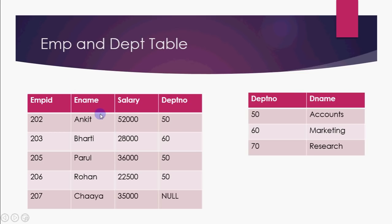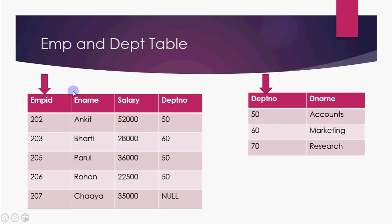The employee table stores employee-related data, and the department table stores department-related data. In the employee table, we have columns like employee ID, employee name, salary, and department number. Clearly, employee ID identifies one employee — it is unique and cannot be left blank. Similarly, in the department table, department number identifies each department — it is unique and not null. So employee ID is the primary key of the employee table, and department number is the primary key of the department table.